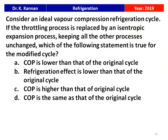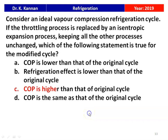The next question from the 2019 question paper: Consider an ideal vapor compression refrigeration cycle. If the throttling process is replaced by an isentropic expansion process, keeping all other processes unchanged, which statement is true? Options: COP is lower, refrigeration effect is lower, COP is higher, or COP is the same. The answer is: COP is higher than that of the original cycle.